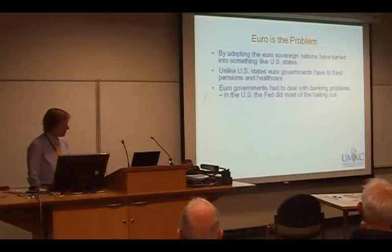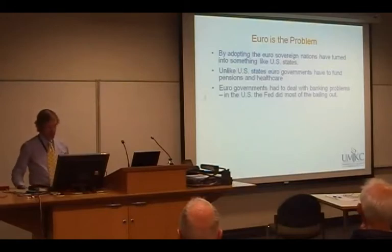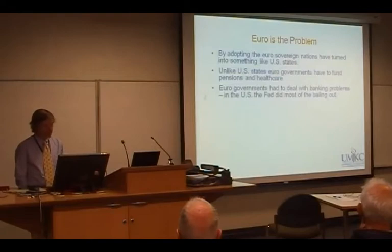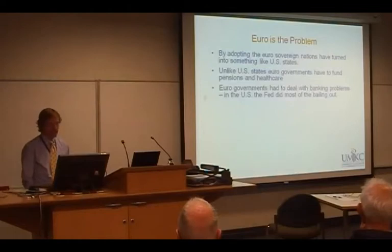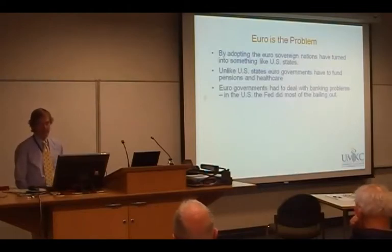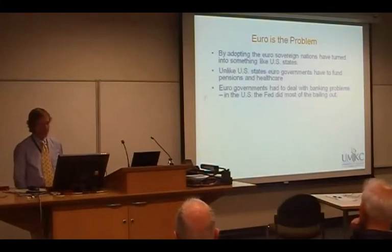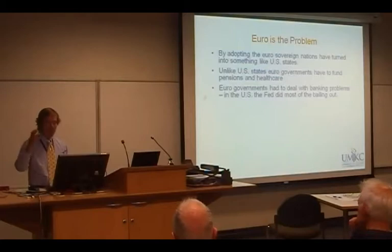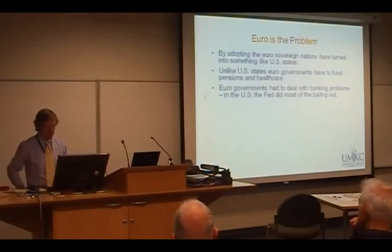The euro is the problem. By adopting the euro, the sovereign nations have turned into something like US states. Unlike US states, euro governments have to fund pensions and health care. We don't ask California and New York to fund the pensions and health care of their entire populations — the federal government does that. Euro governments also had to deal with banking problems. We don't ask our states to bail out the banks when you have a banking crisis, but the euro states had to do that. The US state debt-to-GDP ratios are nothing like 60% of GDP — the markets will shut them down if they try to increase their debt ratios beyond these very low numbers.